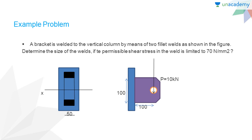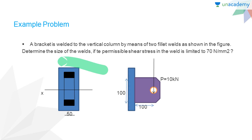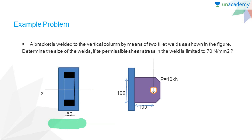Here in this figure, we have a vertical column which is welded to the support by means of two fillet welds. The weld pattern is given in the figure, and the length of the fillet weld is 50 millimeters. The vertical column is under an axial load of magnitude P equals 10 kilonewtons, applied at a distance of 100 millimeters from the support.